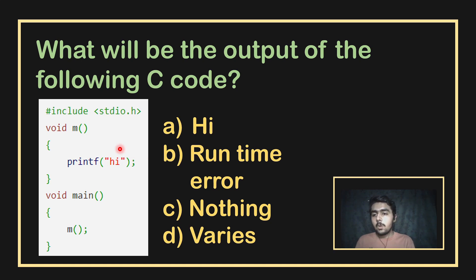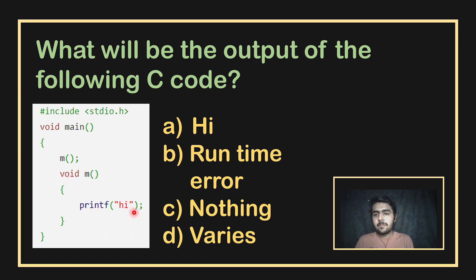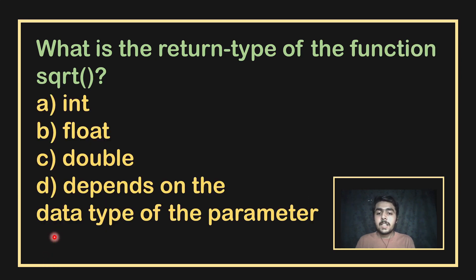What will be the output of the following C code where the function is defined after main but not declared before use? The result will be a run-time error because the function was defined without being declared first, and no arguments were specified. The function definition must be done outside the main function to be valid.